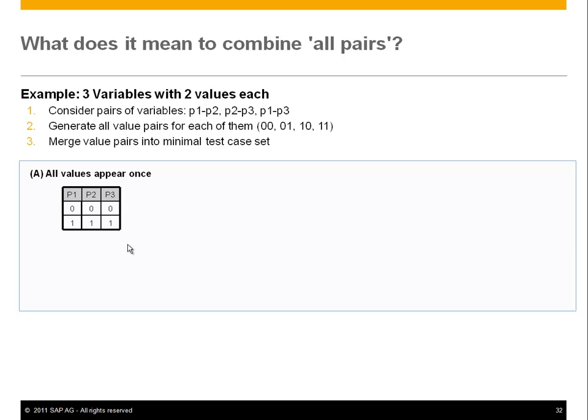What does it mean to combine all pairs? Consider three variables with two values each. You consider the pairs of variables: P1-P2, P2-P3, and P1-P3. For each pair, you must ensure all value combinations — 0,0; 0,1; 1,0; 1,1 — appear at least once in the test suite. The tool merges value pairs into a minimal test case set to cover all pairs.